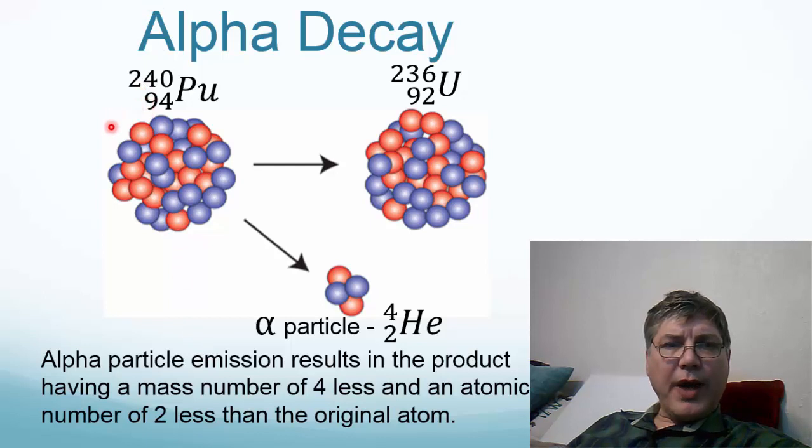Alpha decay occurs when we have an unstable nuclei. In this example, I've got plutonium-240, and it is going to decay by alpha emission. And when it spits out two protons and two neutrons, it loses four from its mass number, so it goes from 240 down to 236. It also loses two from its atomic number, so it goes from 94 down to 92. So we've got true transmutation, where one element is becoming another element.